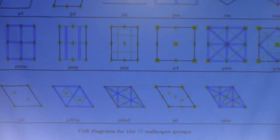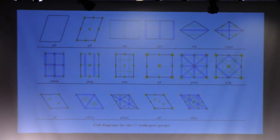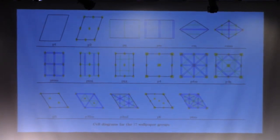These are the 17 cells. The solid black lines just border the cell, they don't tell us anything about the symmetry. The yellow shapes represent rotational symmetry: yellow diamonds represent twofold rotational symmetry, triangles threefold, squares fourfold, and hexagons sixfold.